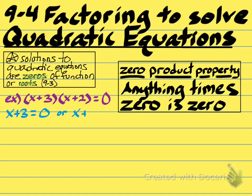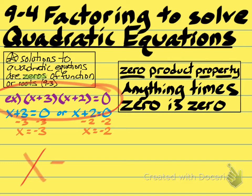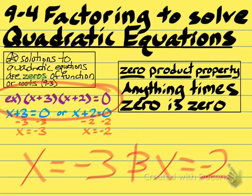For example, if x plus 3 equaled zero, well then we would have zero times x plus 2. It doesn't matter what x plus 2 becomes — we are multiplying it by zero, and zero times anything is zero. So if we can figure out what would make x plus 3 become zero, we would be finding one of the solutions. You would just subtract 3 from both sides: 0 minus 3 gives x equals negative 3. Or subtract 2 from both sides: 0 minus 2 gives negative 2. So the solutions are x equals negative 3 and x equals negative 2.